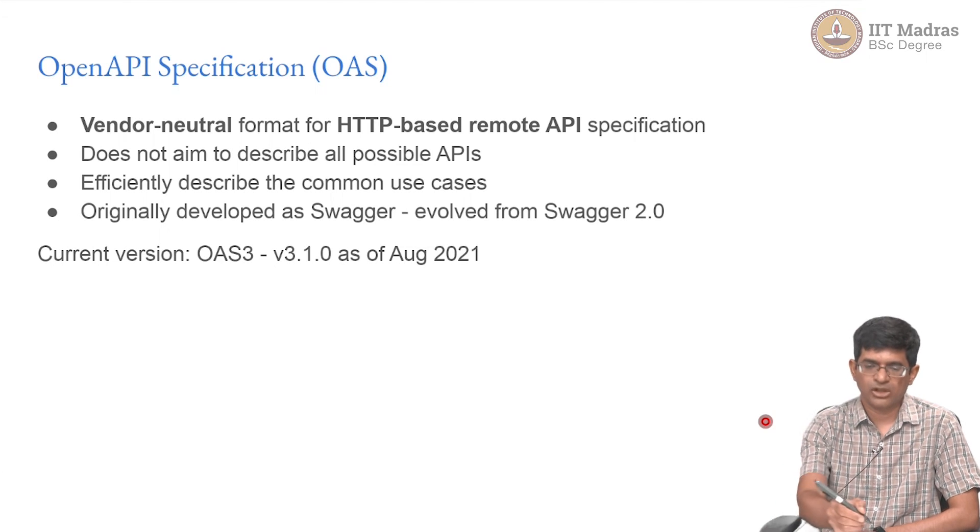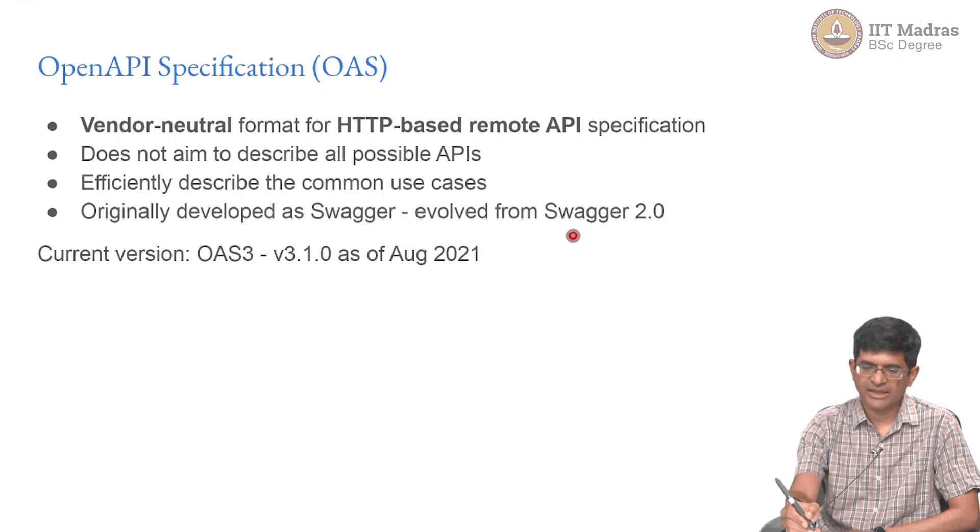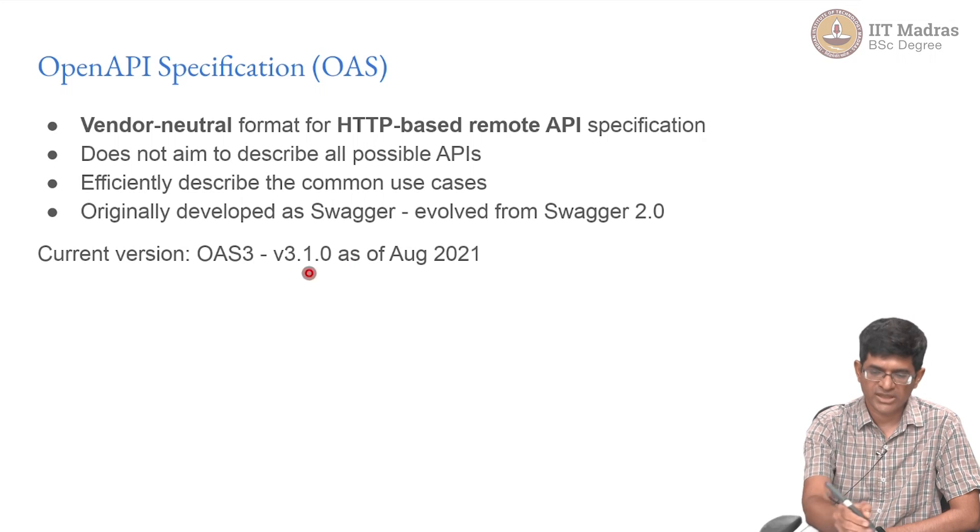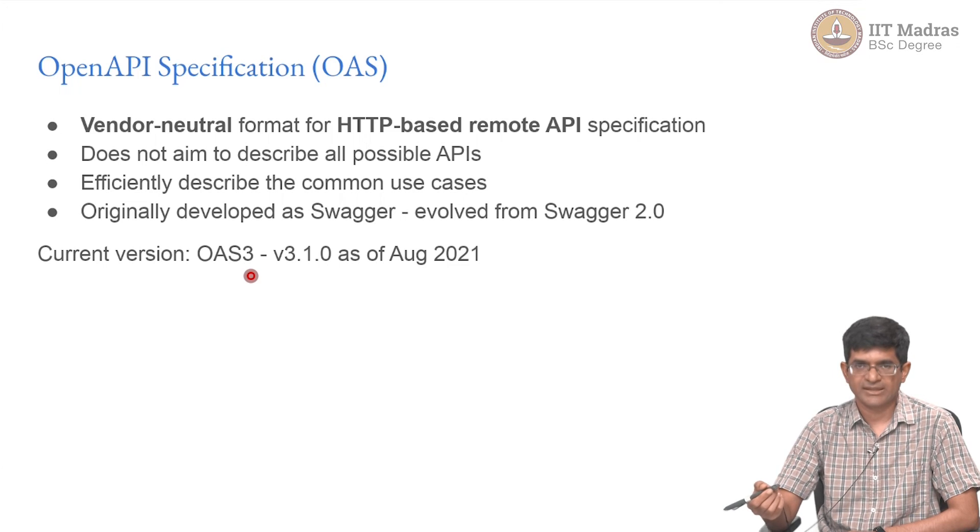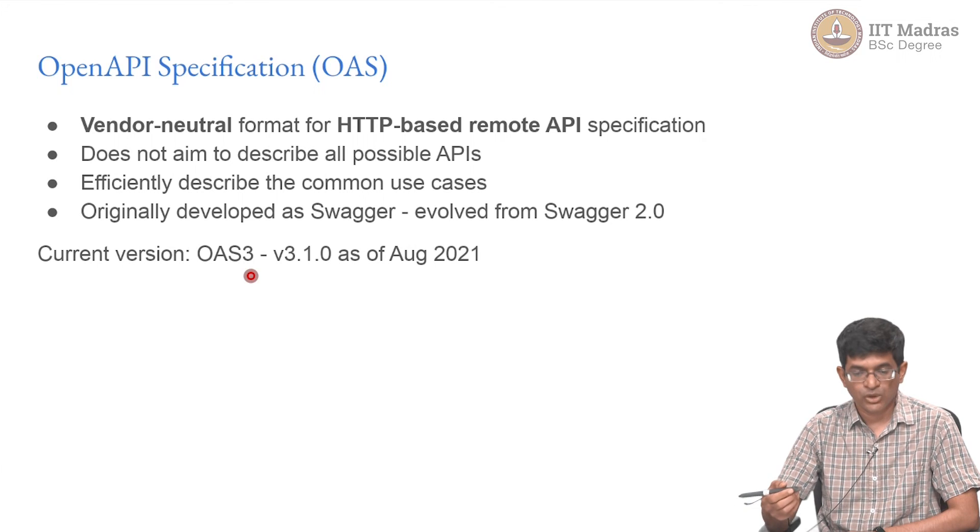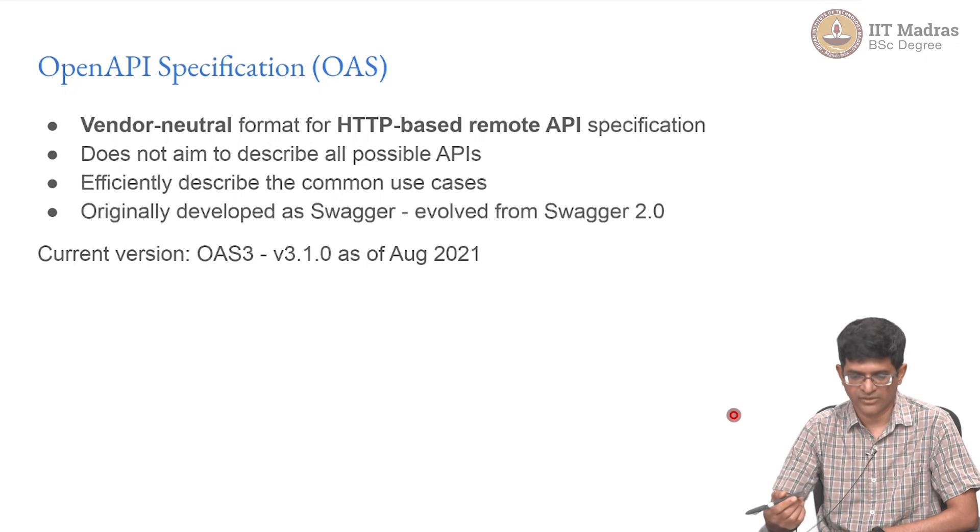This evolved from something called Swagger, which was developed by a company called SmartBear somewhere around 2015 or so. The current OAS standard evolved from Swagger 2.0. And as of August 2021, we are at OAS 3 - that is the Open API Specification version 3, which is what is currently used. You are likely to see this mentioned in various places as Swagger documentation, simply because it originated from there and it is still very closely tied to that. There are things like Swagger UI and various Swagger tools and so on which work with OpenAPI to a large extent. And they are very useful tools, and it is probably a good idea for you to understand how they work in different contexts.